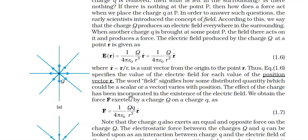The effect of the charge is incorporated in the existence of the electric field. The charge Q in the numerator shows that a larger Q gives a larger field, and a larger R in the denominator (R²) gives a smaller field. We obtain the force F exerted by capital Q on small q: F = (1 / 4πε₀) · (Qq / R²) · R̂. Note that small q also exerts an equal and opposite force on capital Q.